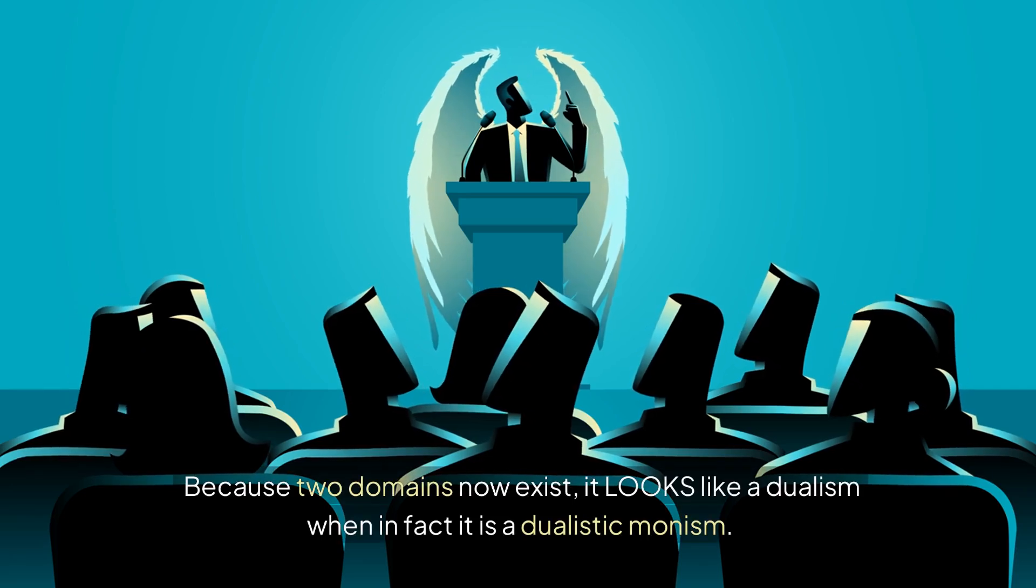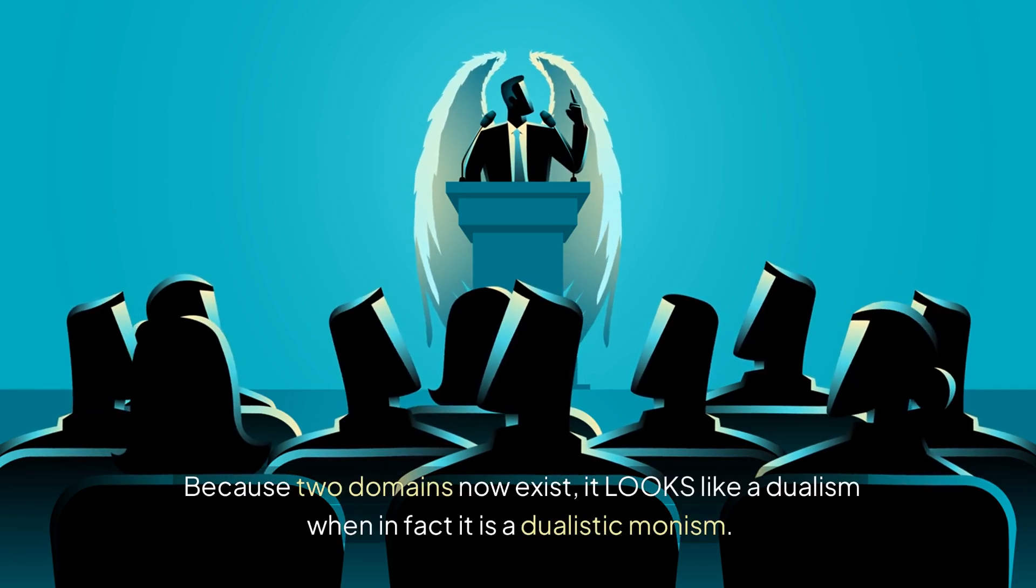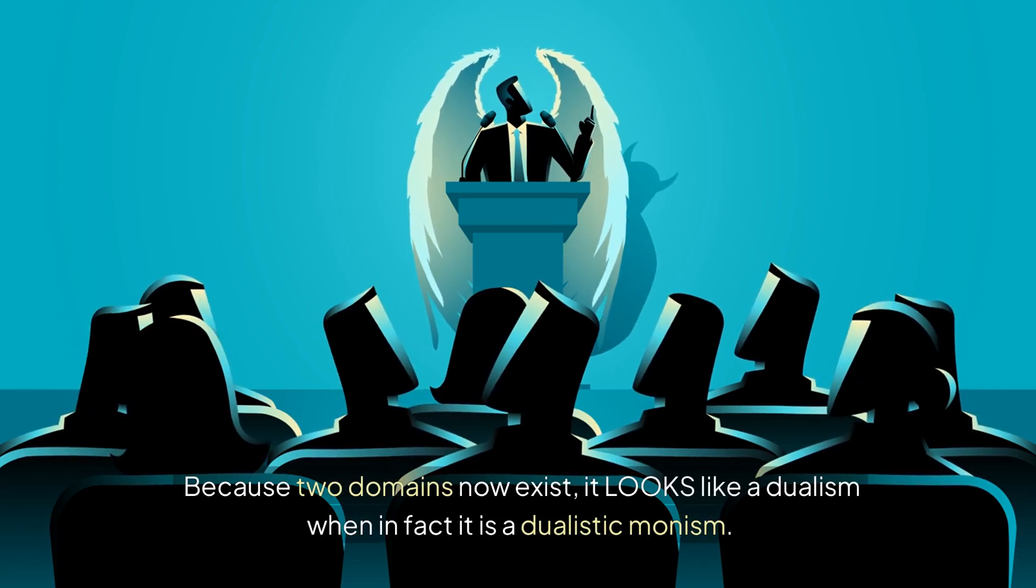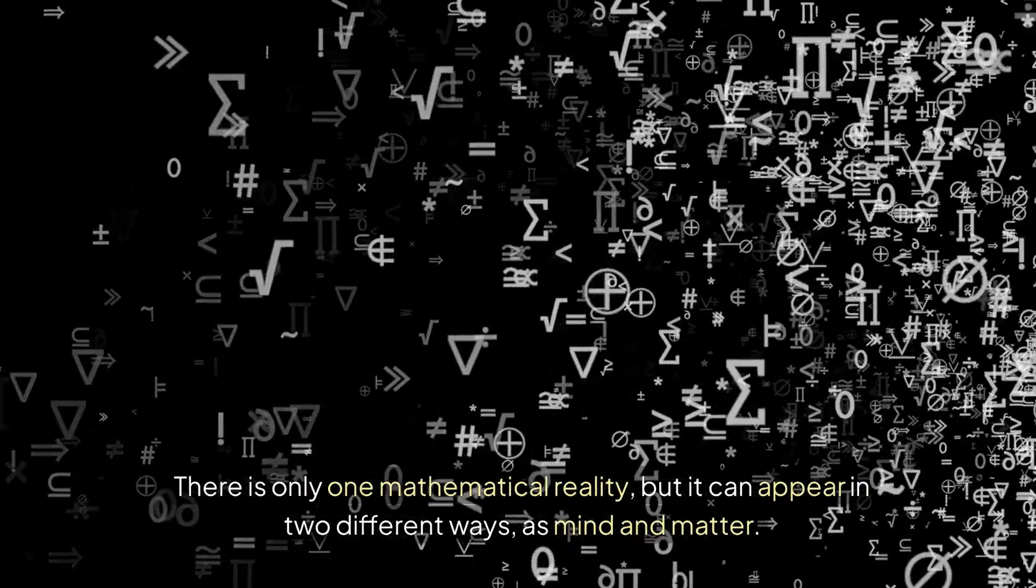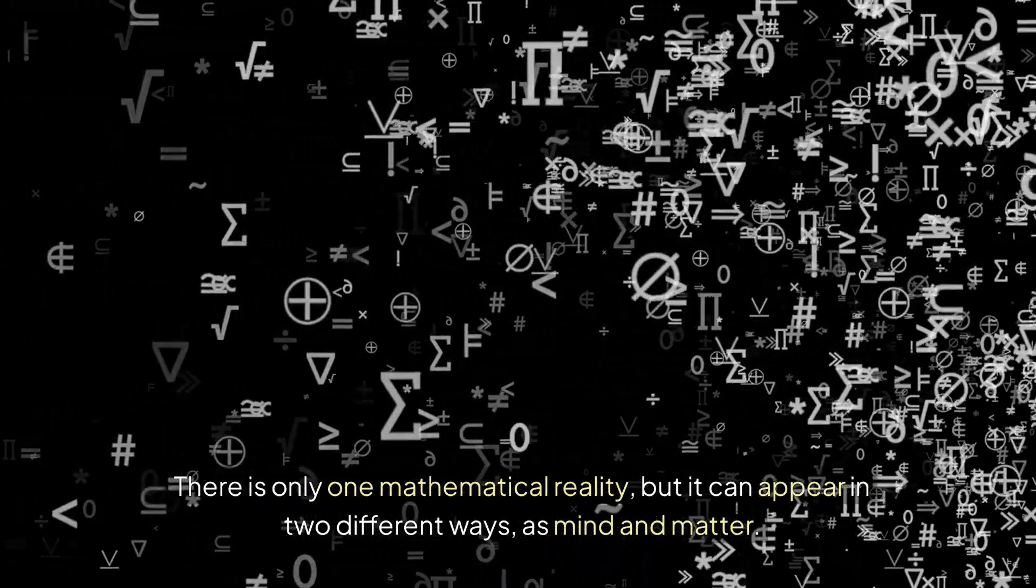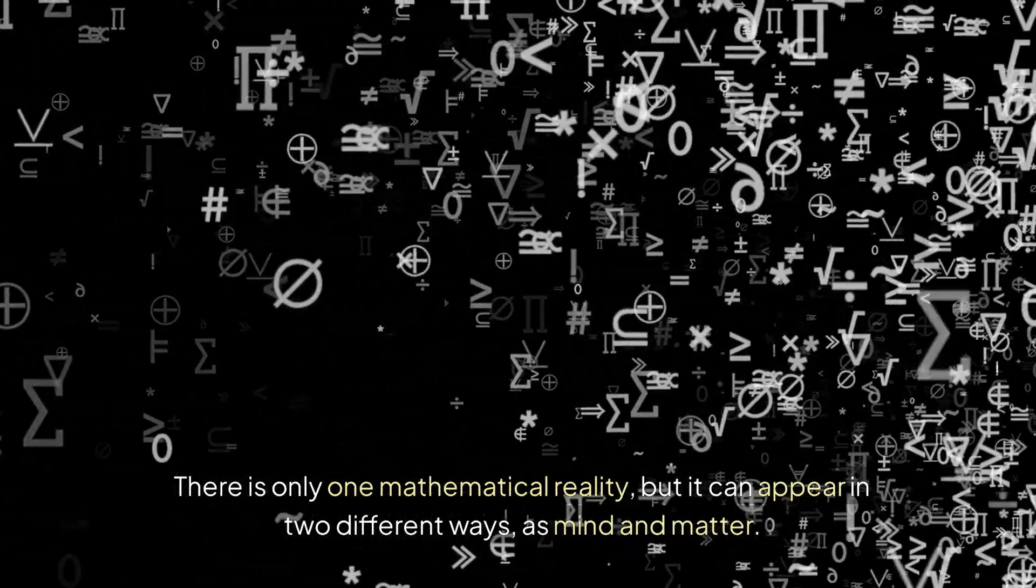Because two domains now exist, it looks like a dualism when in fact it is a dualistic monism. There is only one mathematical reality, but it can appear in two different ways, as mind and matter.